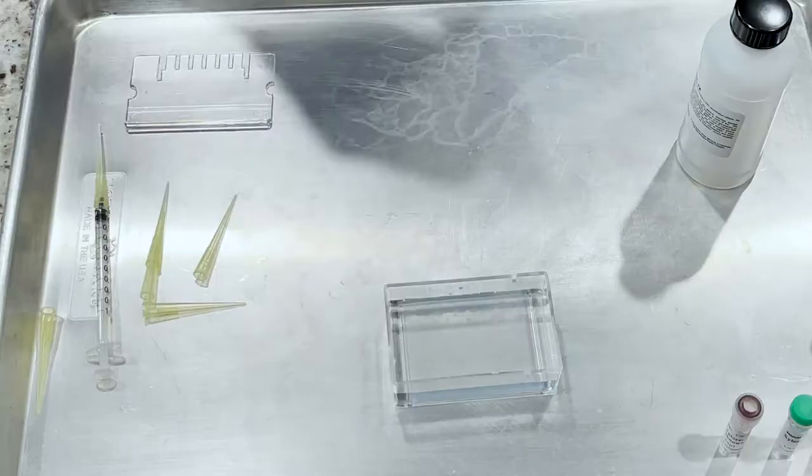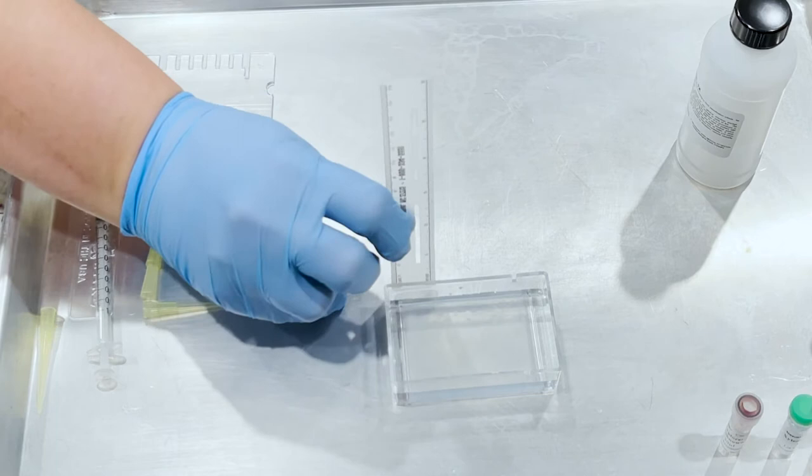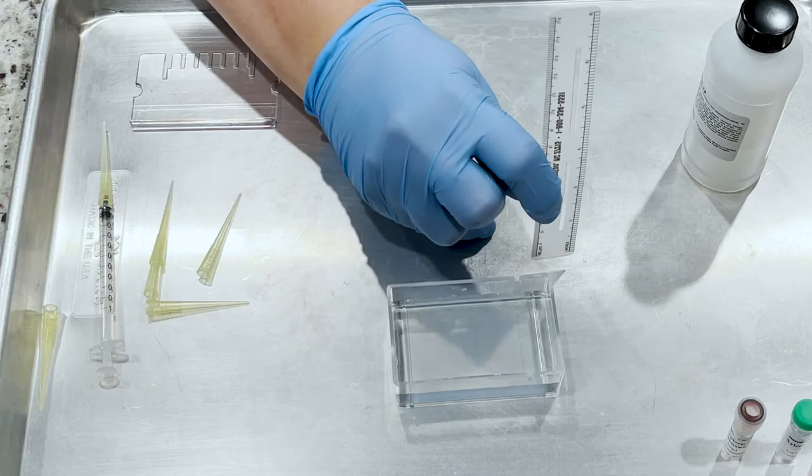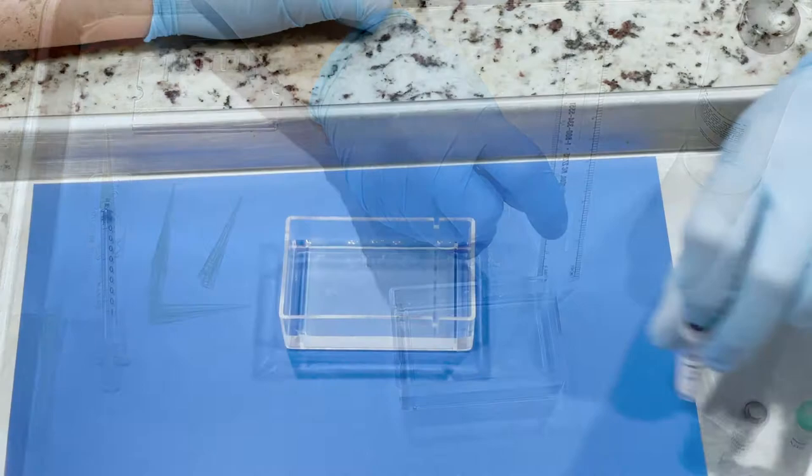The buffer should completely cover the gel. You'll notice here I wasn't sure if I had enough buffer or too much, so I pulled out my ruler just to check. I actually had a little too much buffer so I ended up pouring some off. That's totally fine to do if you accidentally pour too much, but basically it should cover the gel well and just have maybe a couple of millimeters above it. You'll notice that I put the gel box against a dark background because it helps me to see the wells better.